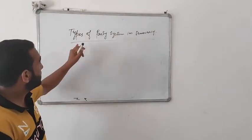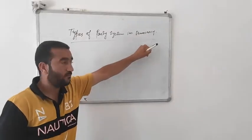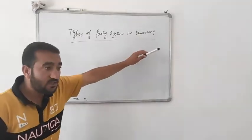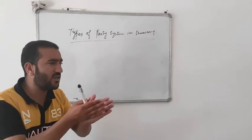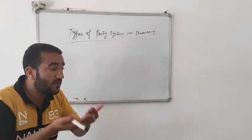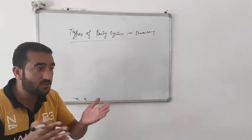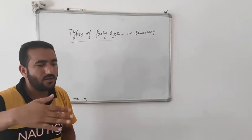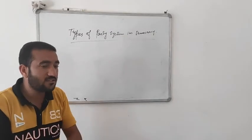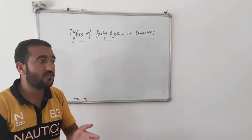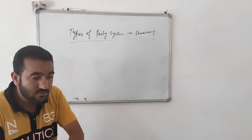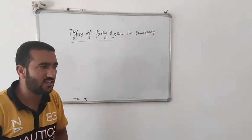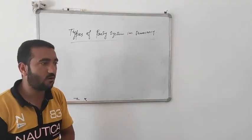Here, inshallah, I am discussing one more topic: types of party systems in democracy. In a democratic political system, all groups of organized citizens have the political right to form various political parties to pursue their interests.